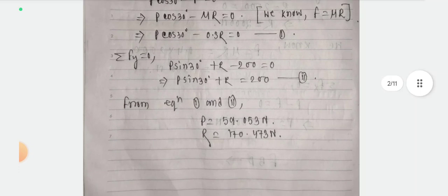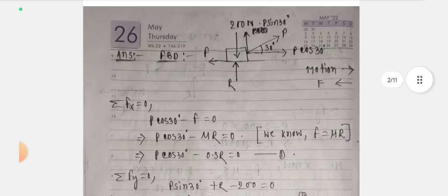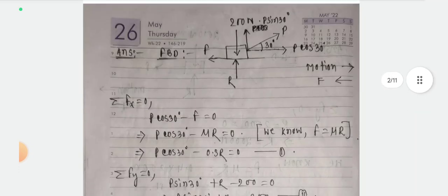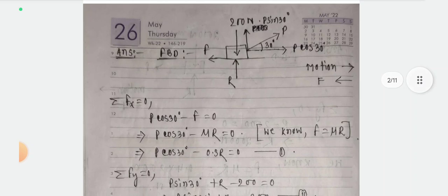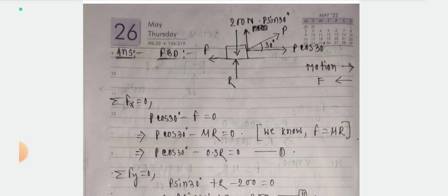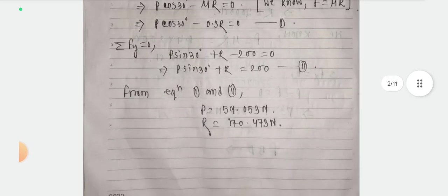Summation of Fy equals to 0. The vertical forces are: R is upward (positive), P sin 30 degree is upward (positive), and 200 N is downward (negative). So the equation is: P sin 30 degree plus R minus 200 equals to 0. This is Equation number 2.